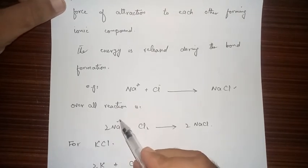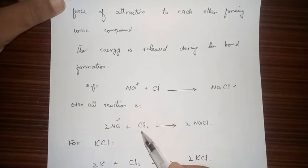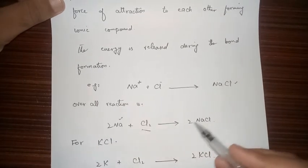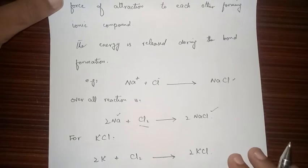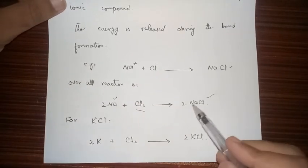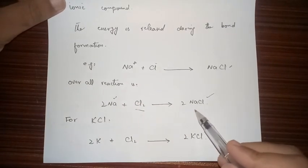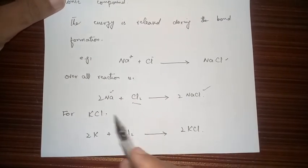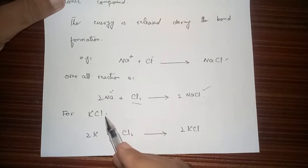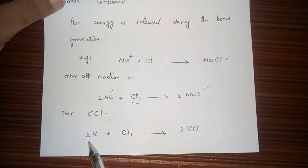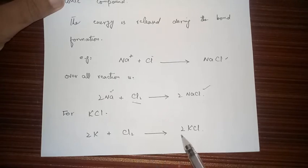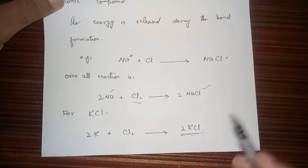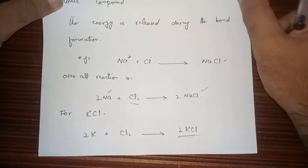Two sodium atoms react with one chlorine gas molecule to form two formula units of sodium chloride. Similarly, for KCl (potassium chloride), two potassium atoms react with chlorine gas to form two potassium chloride salt units.